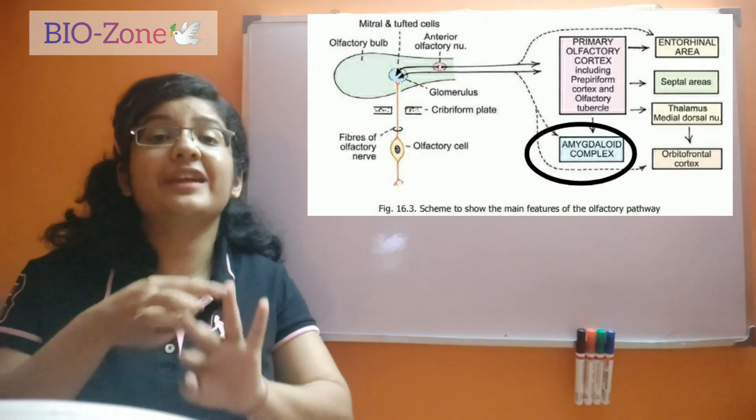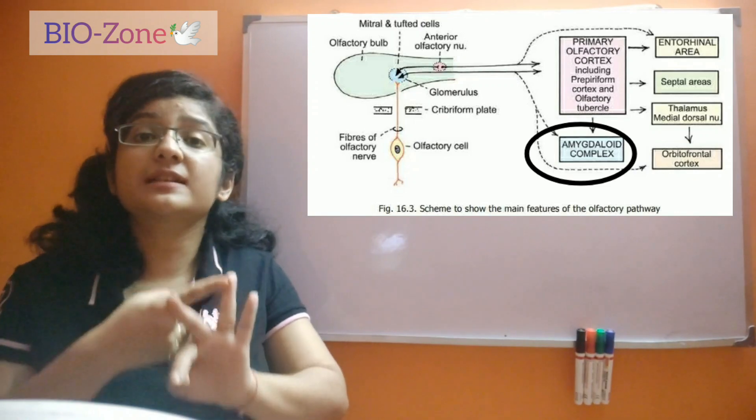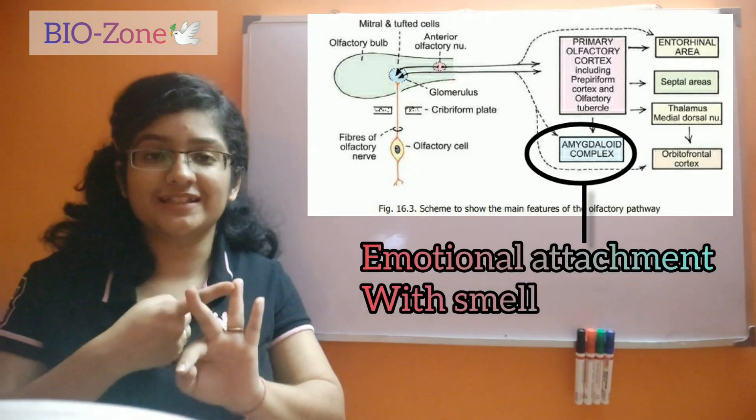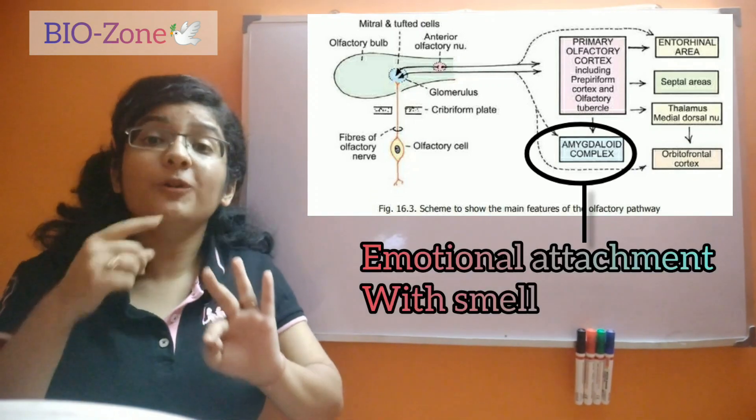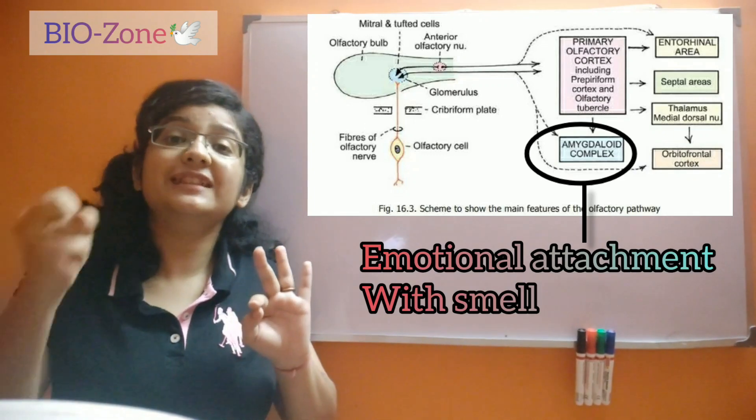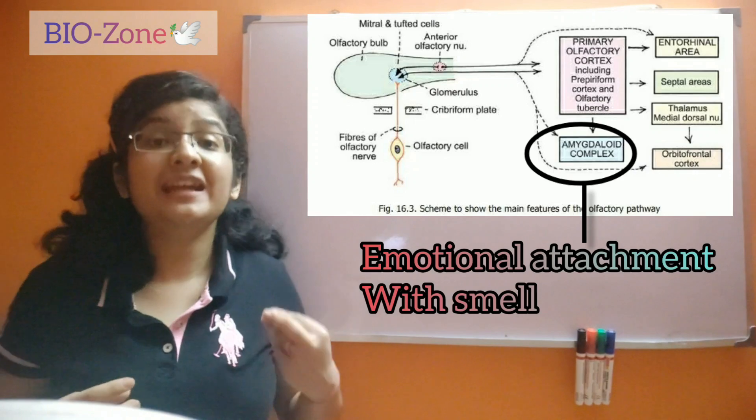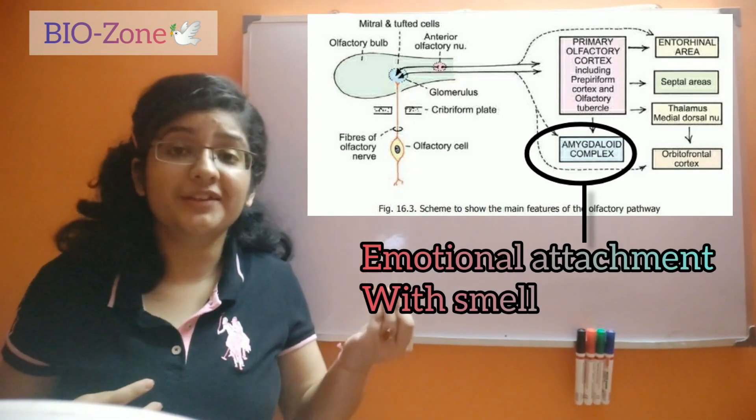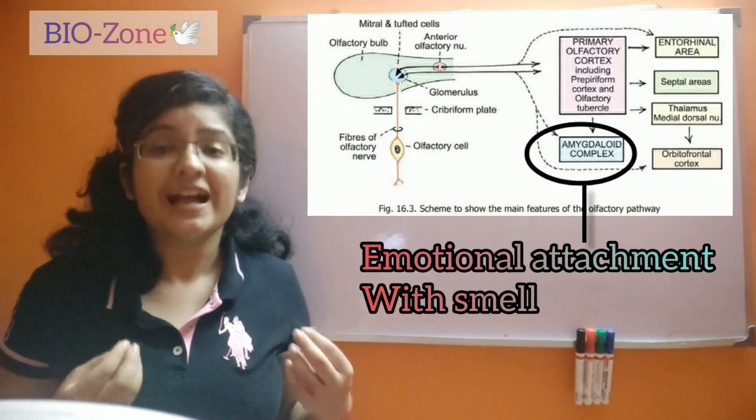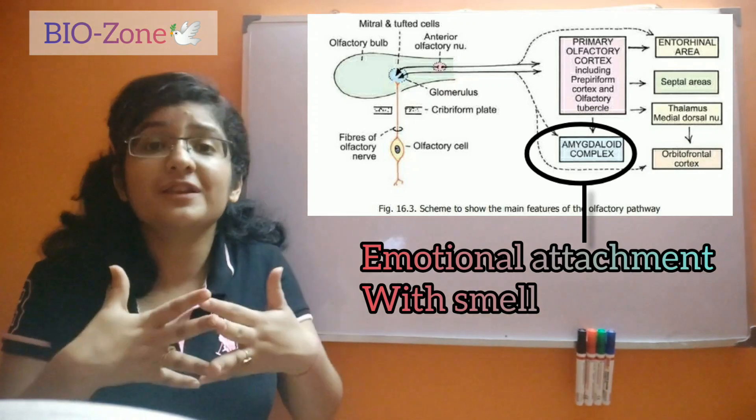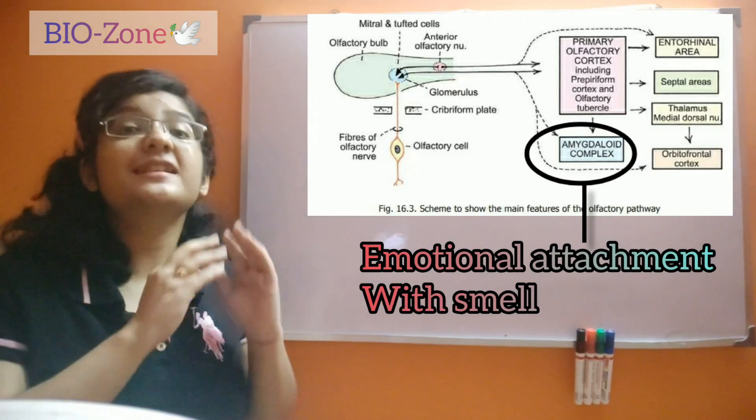Apart from that, we have the amygdala, which is concerned with our emotions, so that the olfactory information which is collected is connected with emotions. So we smell differently our mother and our partners, and we have some emotional bonding with them, right? That is the reason.